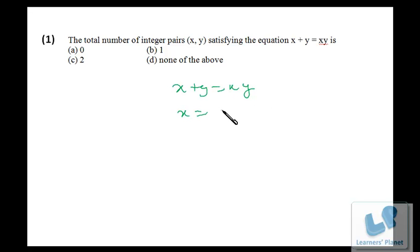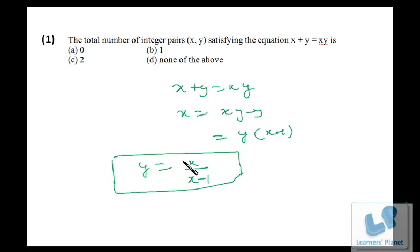So x + y = xy. Therefore x = xy - y, which is equal to y(x - 1). So y = x/(x - 1). Now we got this relation.